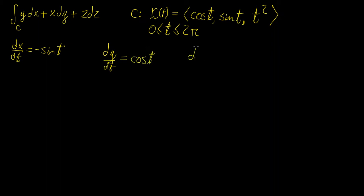And then for the last one, we're going to have dz/dt, and this is going to be 2t. Now if we rearrange, we can say dx equals minus sine of t times dt.